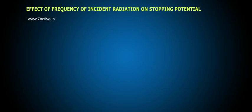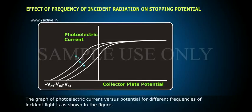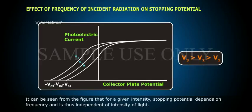Effect of frequency of incident radiation on stopping potential. The graph of photoelectric current versus potential for different frequencies of incident light is shown in the figure. For a given intensity, stopping potential depends on frequency and is thus independent of intensity of light.